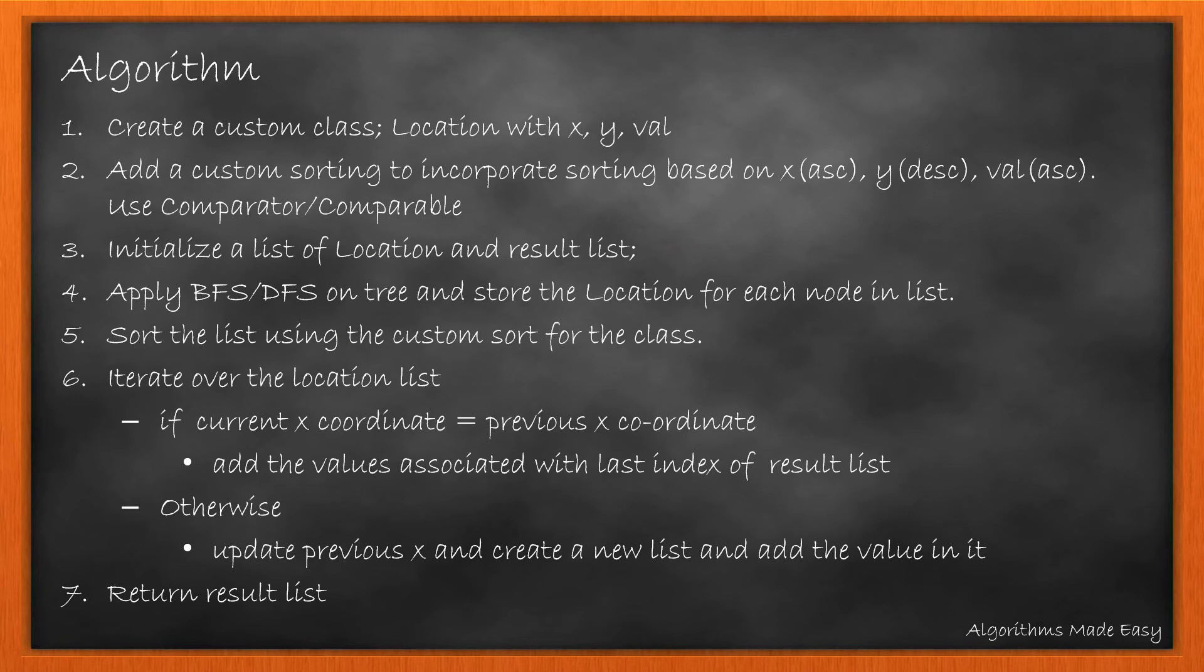Summarizing the steps, we will create a custom class called Location with x, y and node value and add a custom sorting to incorporate sorting based on x, y and value. We can either use a comparator or comparable for this. We will initialize a list of locations and apply BFS or DFS on tree and store the location for each node in list. After that, we sort the list using the custom sort for the class.